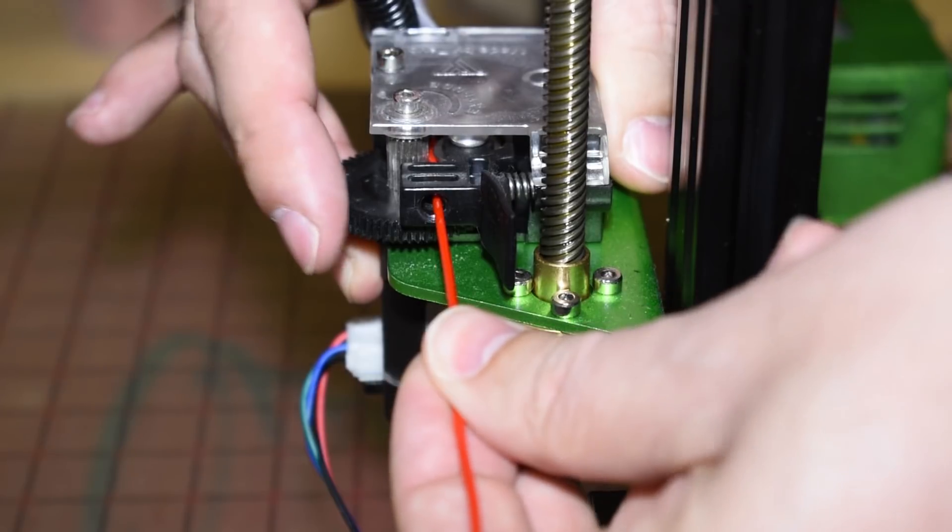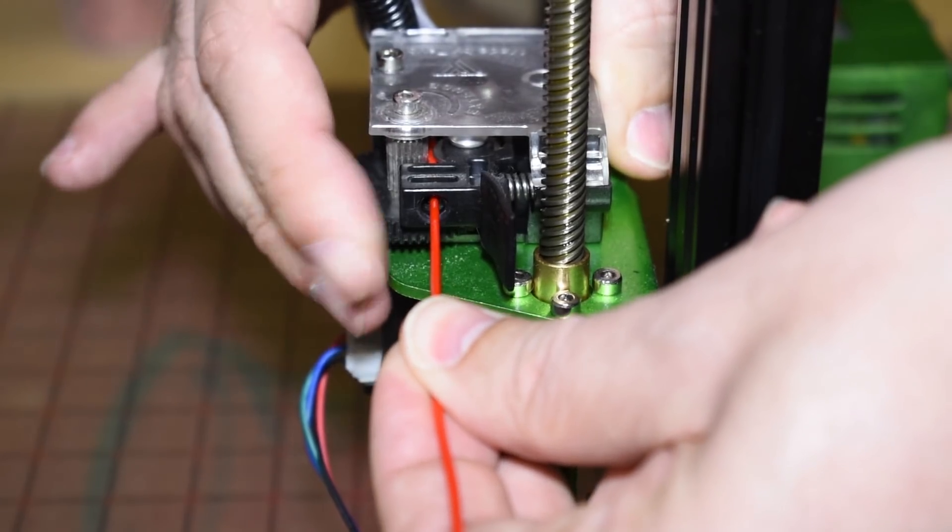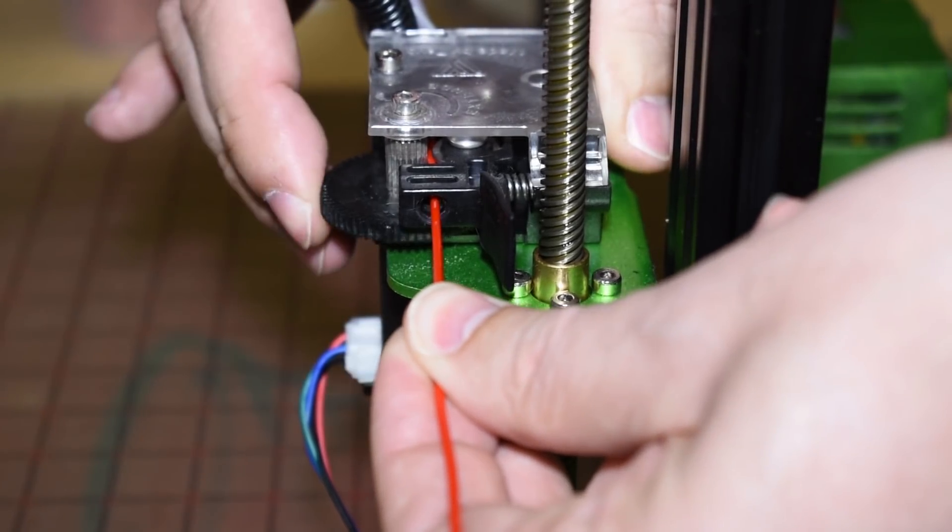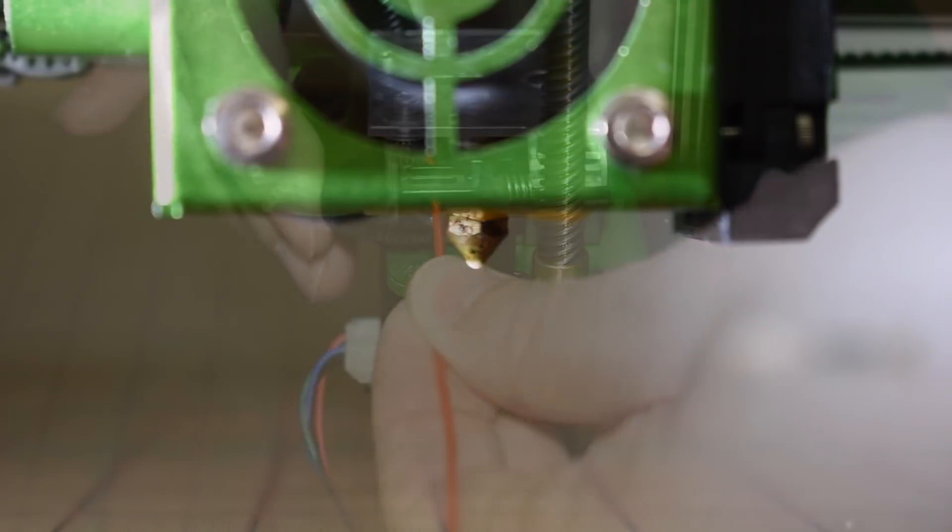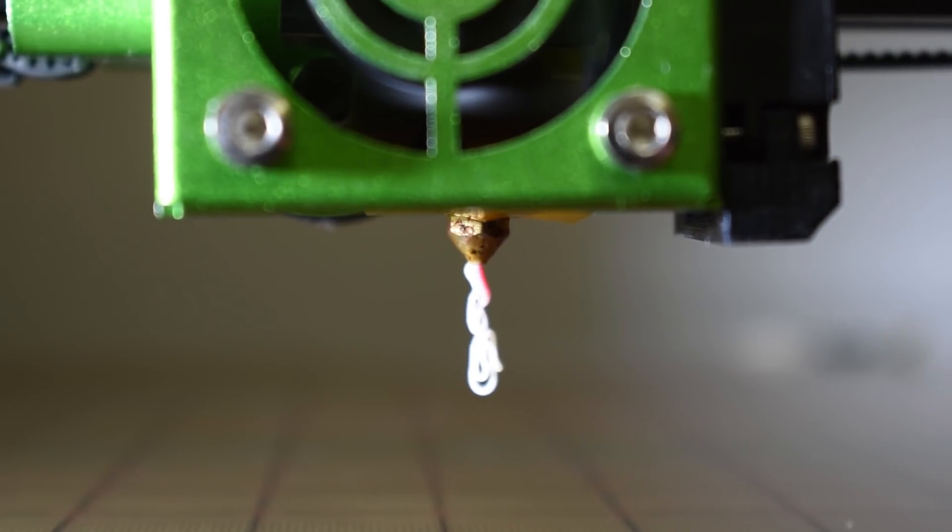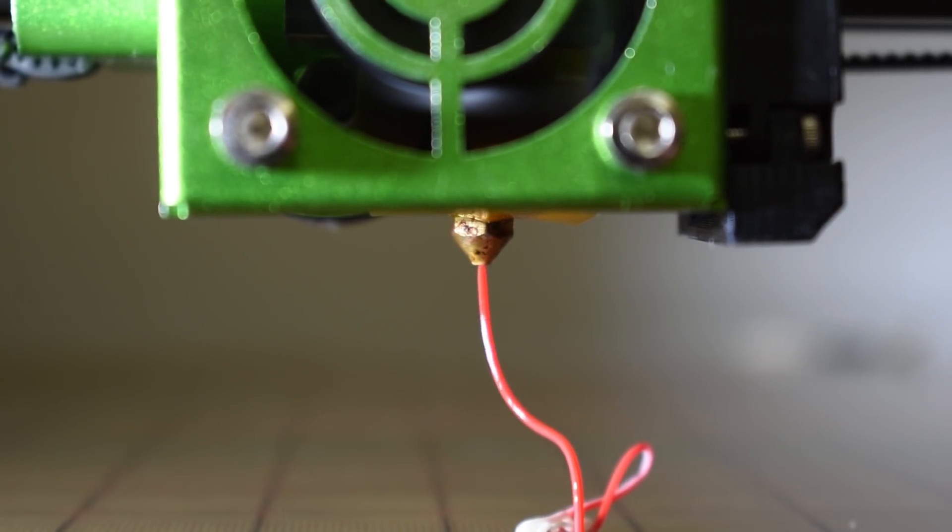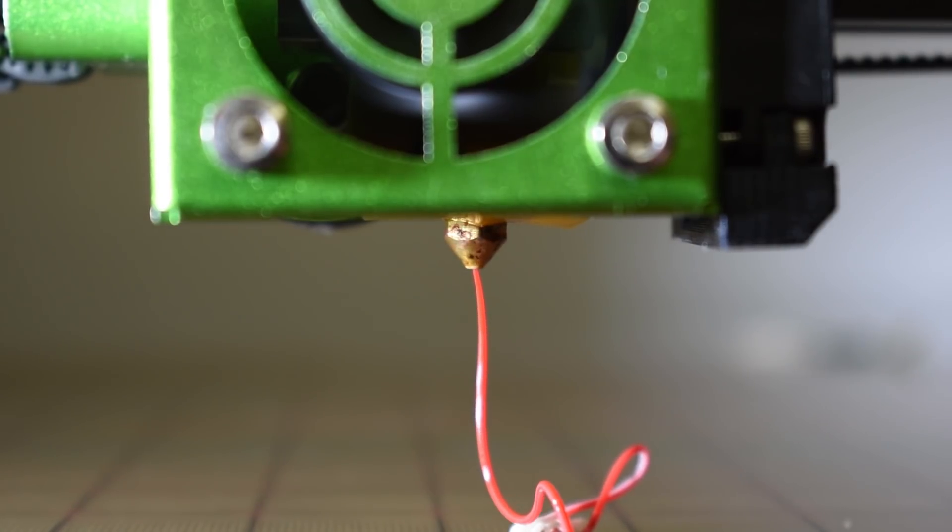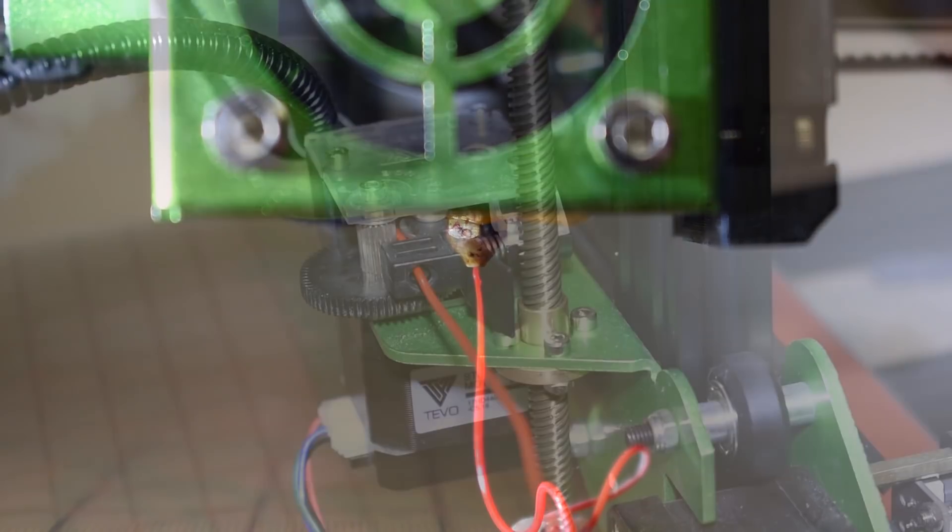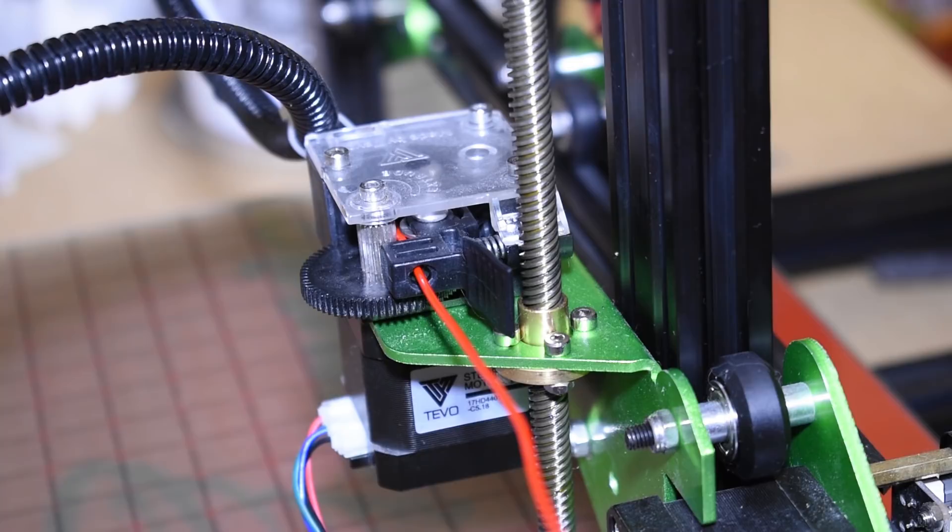Next, rotate the geared wheel so that the filament is pushed in until it comes out from the nozzle. Check your nozzle and see if the filament is coming out and you get a good flow. If this is the first time you load your filament in your brand new Tornado, you will see some white stuff coming out. Don't panic! That's just some white filament left inside the nozzle from the test print done at the factory.